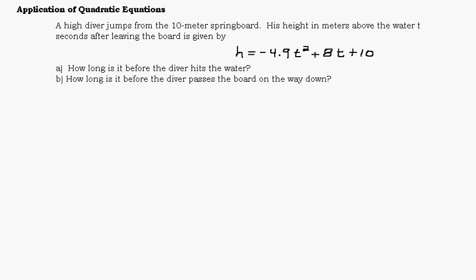In this video, we're going to look at an application of quadratic equations. A high diver jumps from the 10-meter springboard. His height in meters above the water, t seconds after leaving the board, is given by h equals negative 4.9 t squared plus 8t plus 10. We want to find out: (a) how long is it before the diver hits the ground, and (b) how long is it before the diver passes the board on the way down.